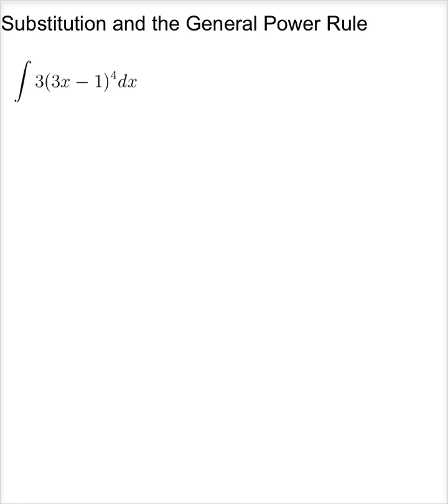So let's look at this function here. If I'm integrating 3 times 3x minus 1 to the fourth, I could multiply this out, but it would be ugly. I'm going to let u equal 3x minus 1. du is 3dx, so there's du.